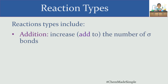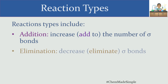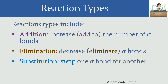The three key reaction types we'll discuss today are addition, elimination, and substitution. Addition reactions increase or add to the number of Sigma bonds. Elimination reactions decrease or eliminate the number of Sigma bonds. Substitution reactions swap one Sigma bond for another. These terms have very specific meanings in chemistry — it's all about what changes we're making to the number of Sigma bonds.